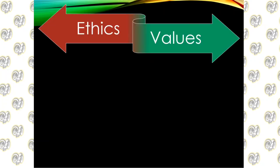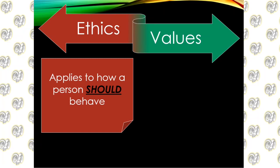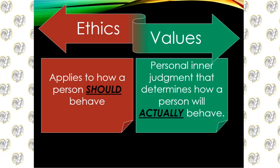Let's look at ethics and values together. Ethics applies to how a person should behave — we believe a person should behave a certain way because it's right or wrong. Values, on the other hand, are your personal inner judgment that determines how you're actually going to behave. For example, a person might say laws are meant to be followed and there's no reason to break the law.